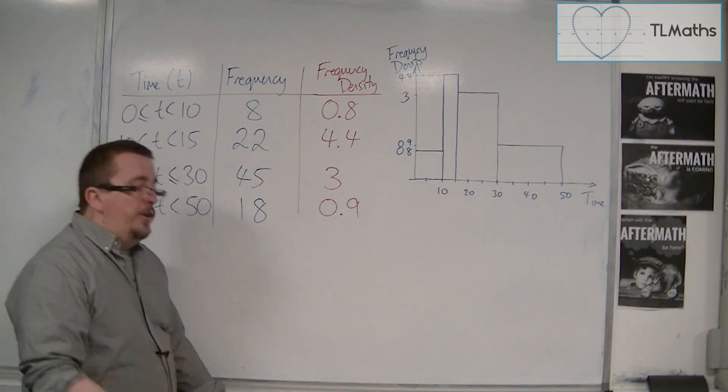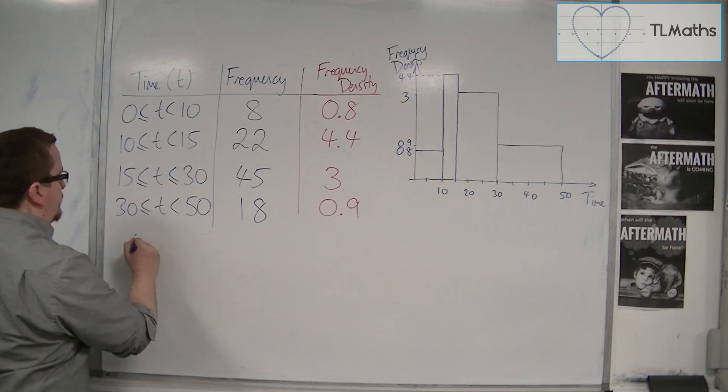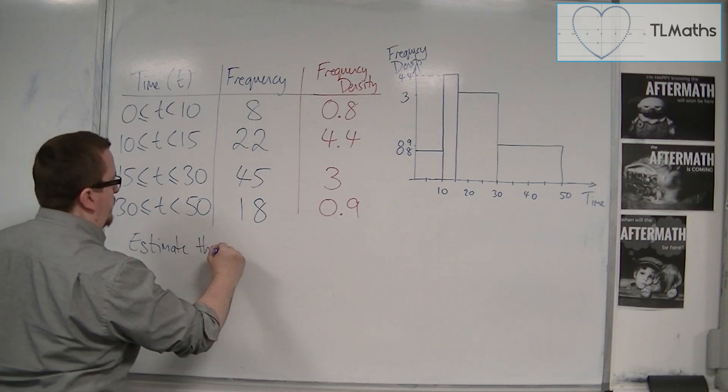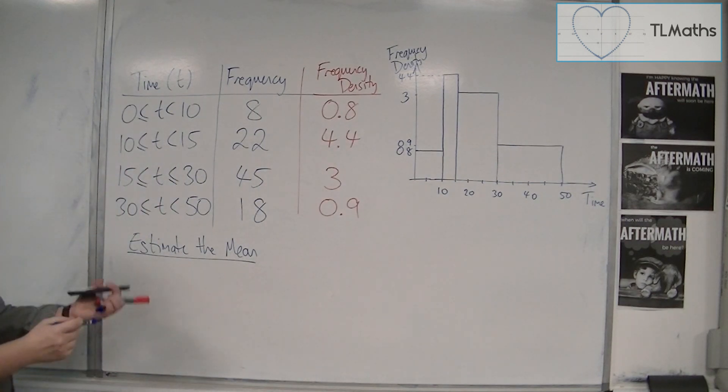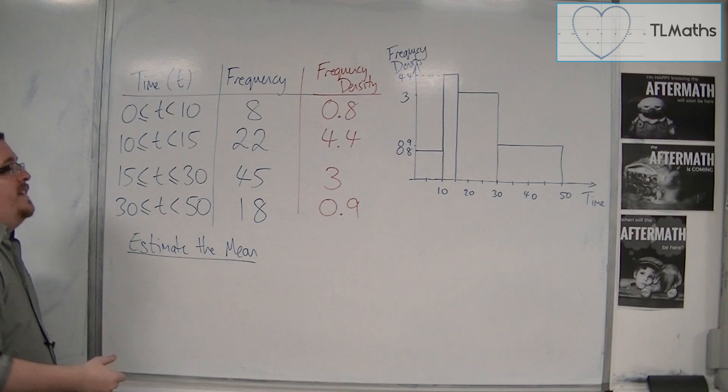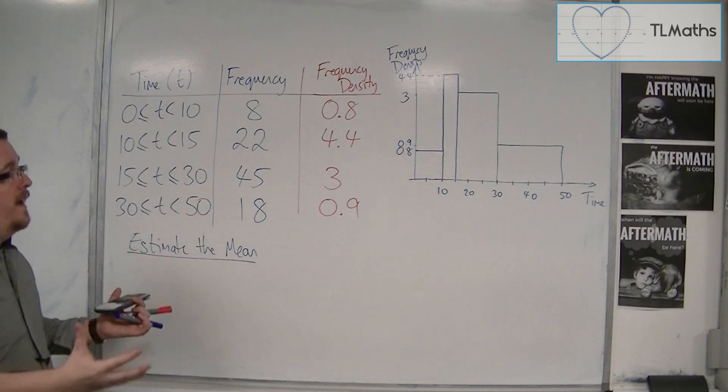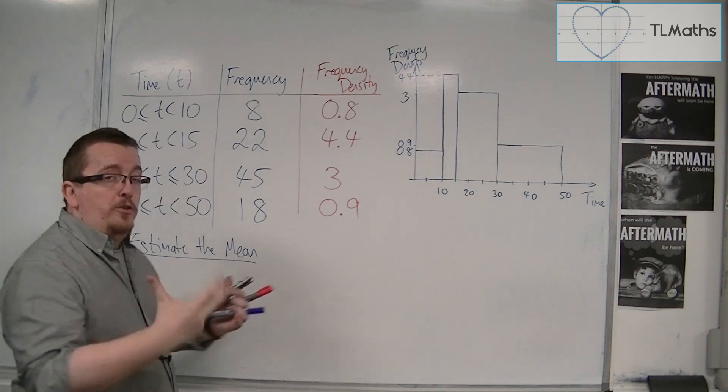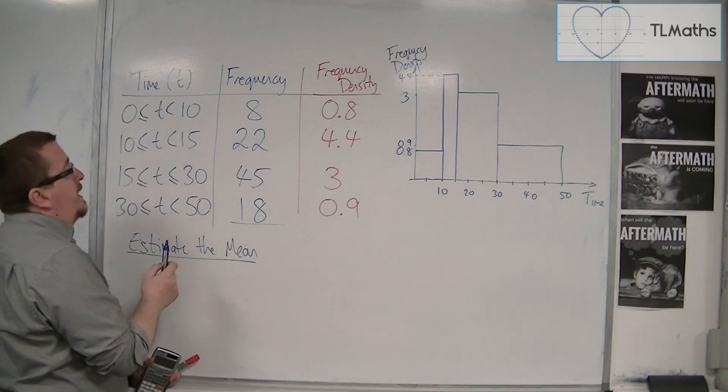So what can we do from this? Well, we could be asked to estimate the mean, for example. So estimate the mean. Now, in order to estimate the mean, I need to know the total number of times that I have. Or the total amount of time, rather. And divide it by the total frequency. Now, the total frequency I can work out very accurately.